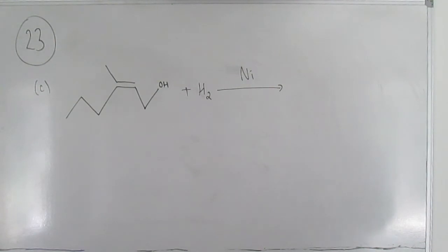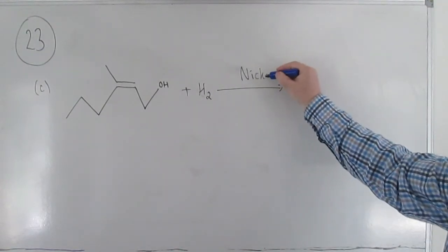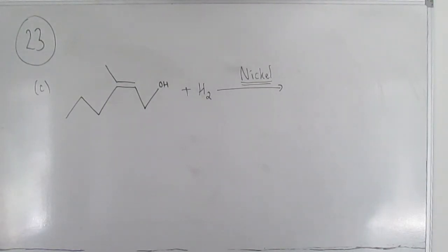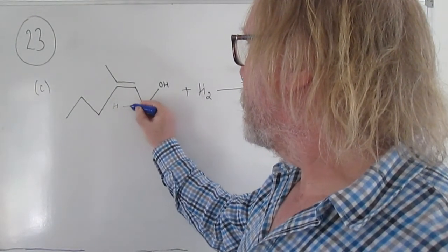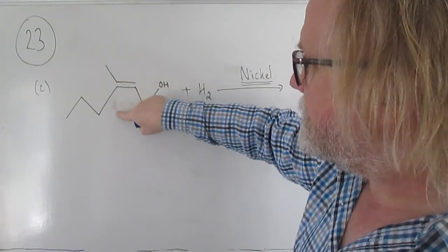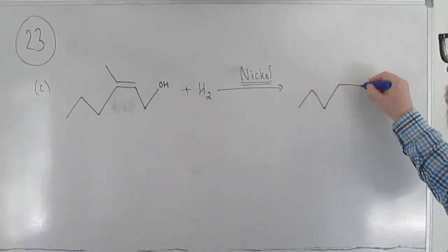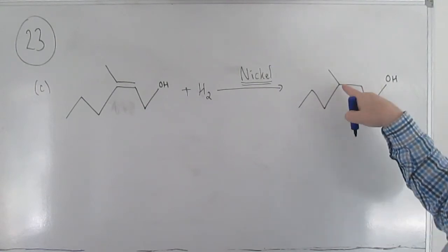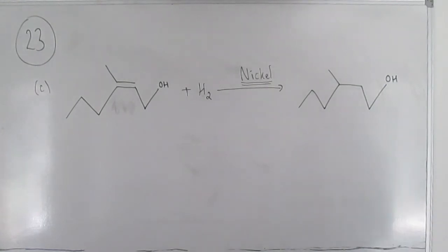Notice that it says 'name the catalyst' — if you just wrote the symbol Ni, you haven't named it; you've got to write the word 'nickel'. They really will penalise that. For the equation: hydrogen adds across the double bond, one H to each end, giving exactly the same carbon framework with the OH group still present but the pi bond replaced — an extra hydrogen at each end of what was the double bond.